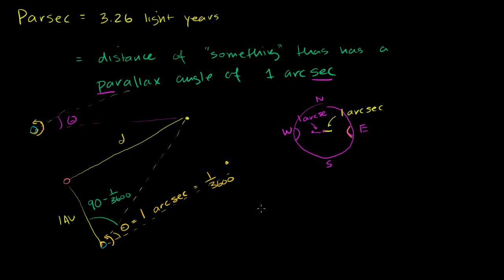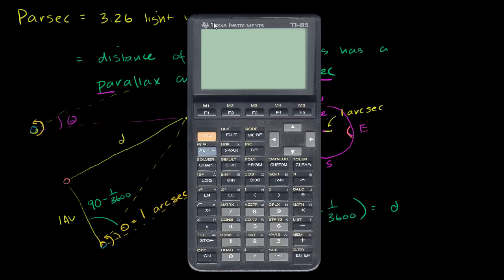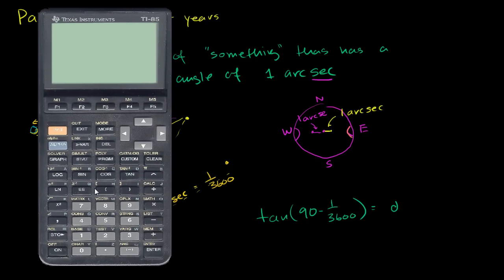The tangent of this angle, the tangent of 90 minus 1 over 3,600 is going to be this distance in astronomical units divided by 1. Well, you divide anything by 1, it's just going to be that distance. So we get our calculator out. And we want to find the tangent of 90 minus 1 divided by 3,600. And we will get our distance in astronomical units.